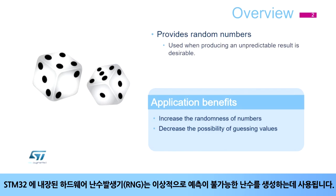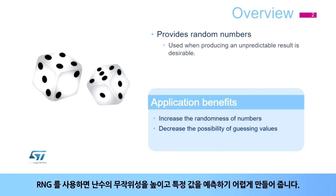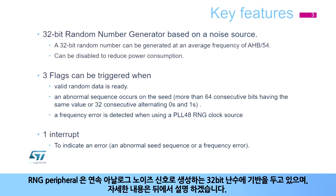The Random Number Generator, or RNG, integrated inside STM32 products provides random numbers which are used when predicting an unpredictable result is desirable. Applications can benefit from the RNG to increase the randomness of numbers or to decrease the possibility of guessing certain values. The RNG peripheral is based on continuous analog noise that provides a random 32-bit value, which will be explained in detail later on.